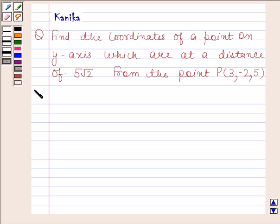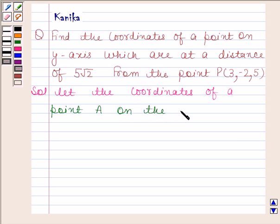Let us now begin with the solution. We know that coordinates of a point on y-axis are of the form (0, y, 0). So let the coordinates of a point A on the y-axis be (0, y, 0).